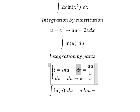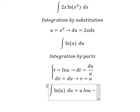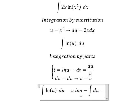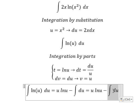For the remaining integral, u divided by u cancels, so we have the integral of du, which equals u.